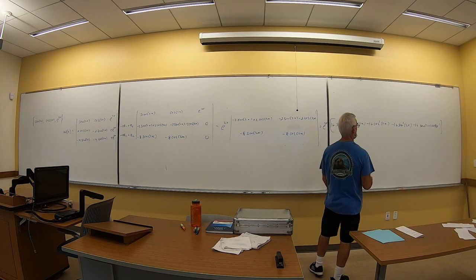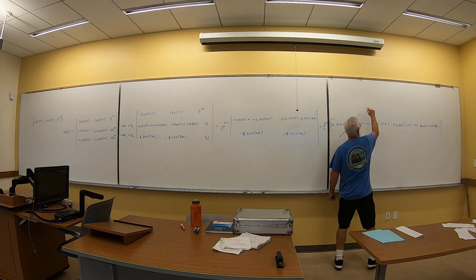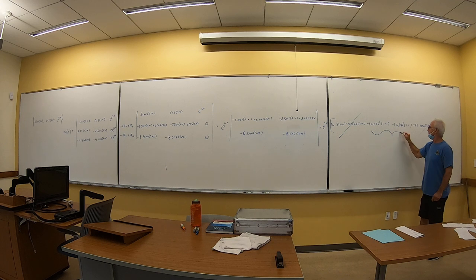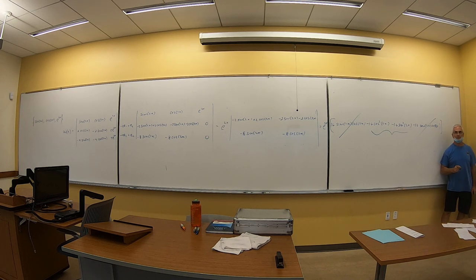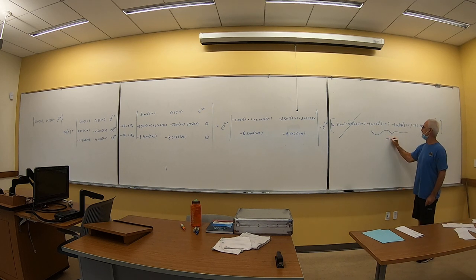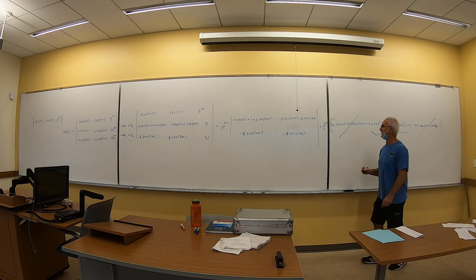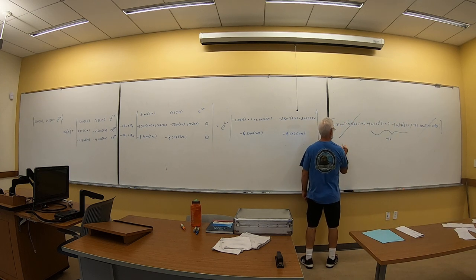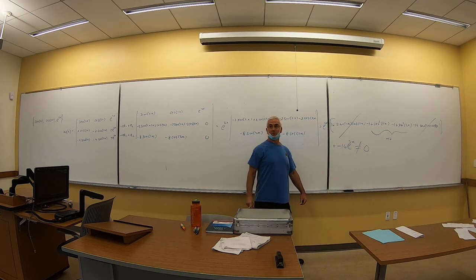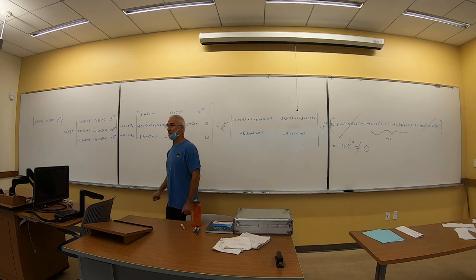Expanding along the last column using e^(2x): the 2×2 minor gives (-2sin(2x)+2cos(2x))(-8cos(2x)) - (-2sin(2x)-2cos(2x))(-8sin(2x)). Expanding: 16sin(2x)cos(2x) - 16cos²(2x) - 16sin²(2x) - 16sin(2x)cos(2x). The sin·cos terms cancel, leaving -16(cos²+sin²) = -16. So the Wronskian is -16e^(2x), which is never zero.